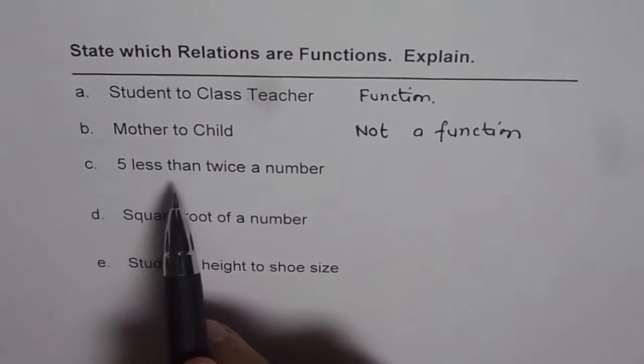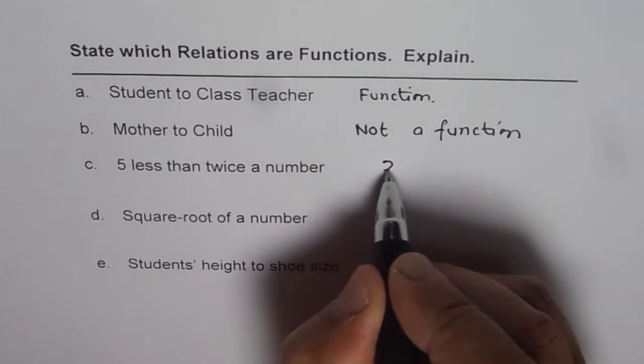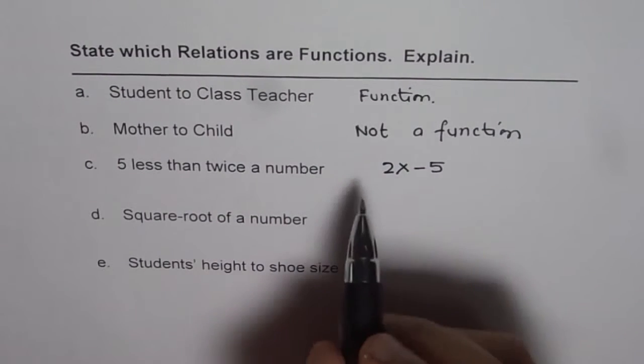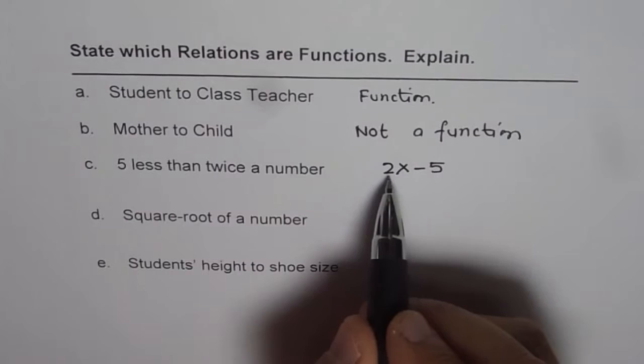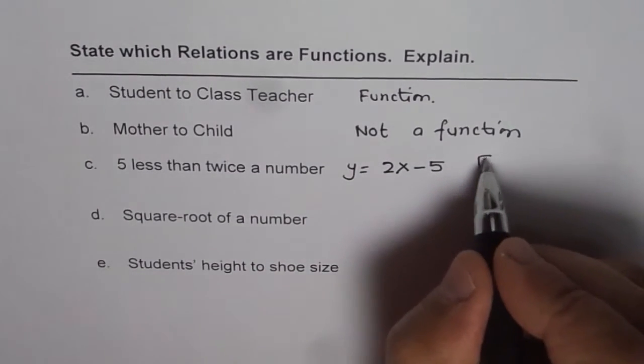Then we have five less than twice a number. That means the relation is y = 2x - 5. Now for every input of x, we will have unique output. We can call it y. And therefore this will be a function.